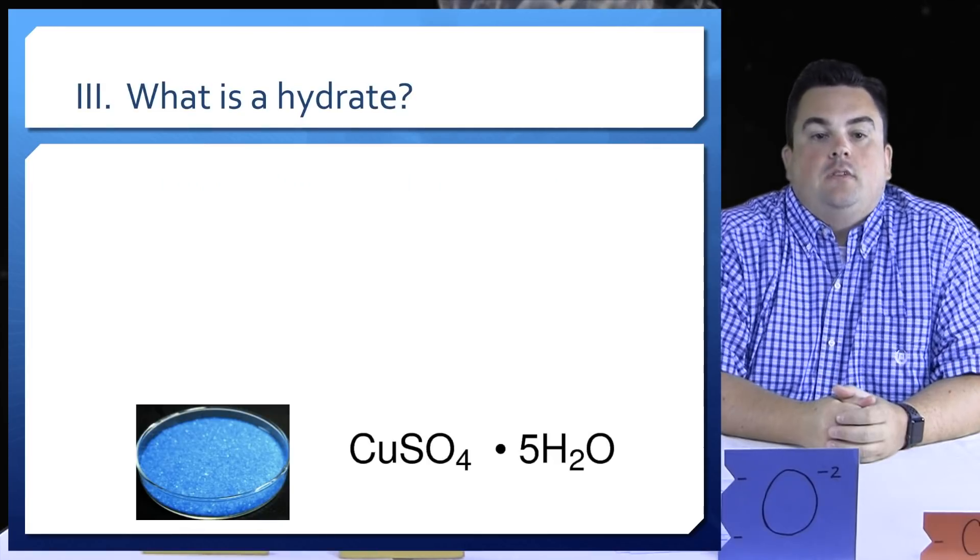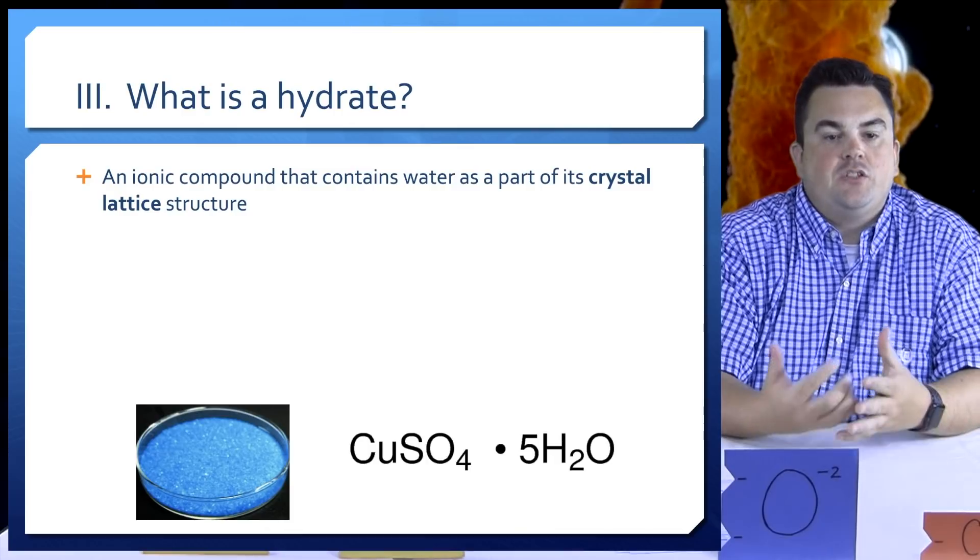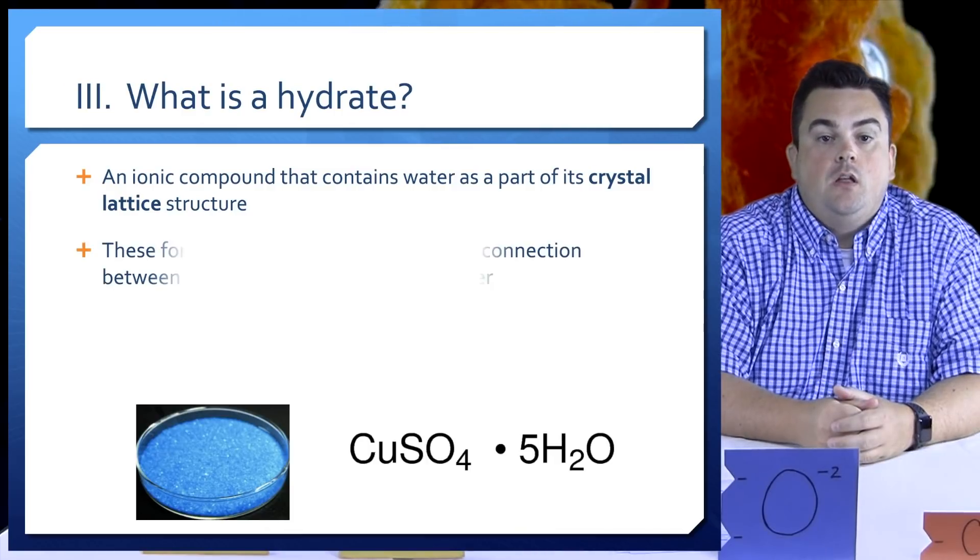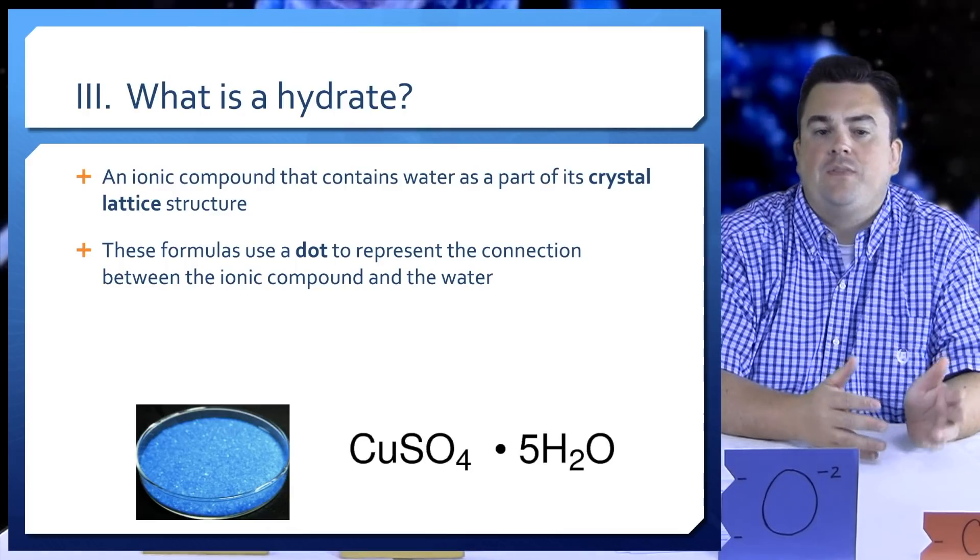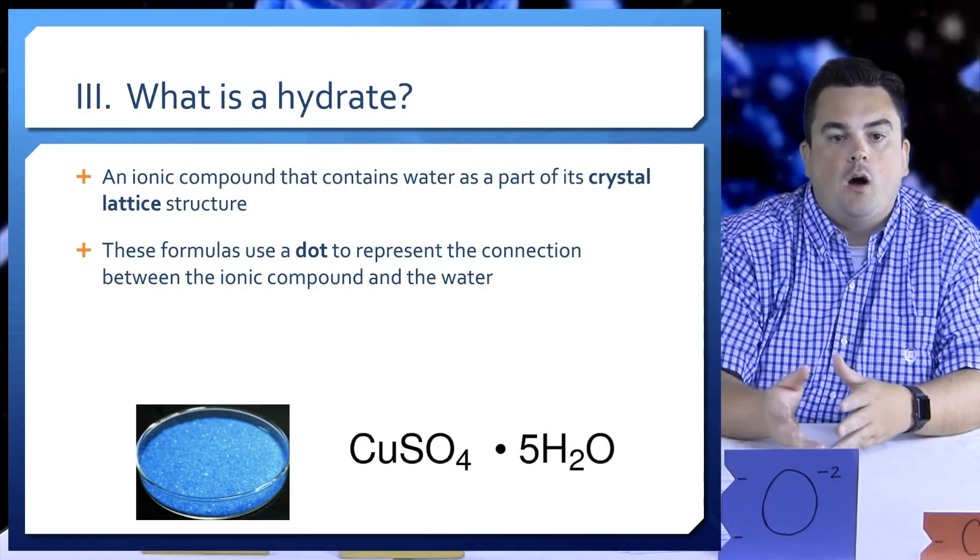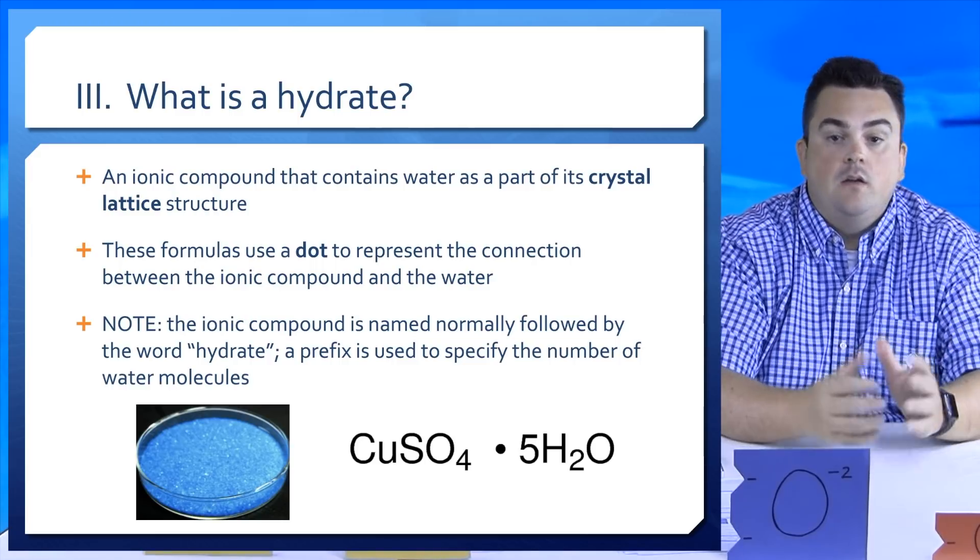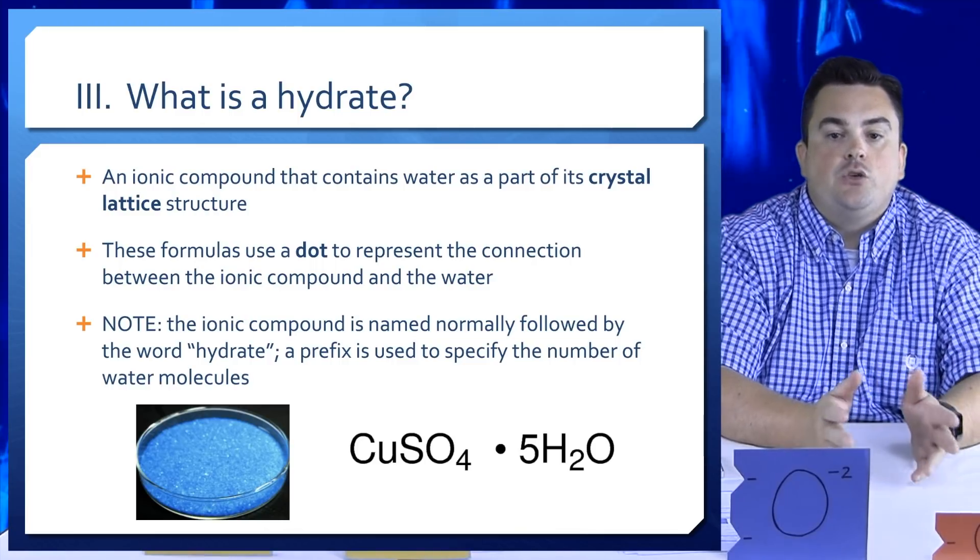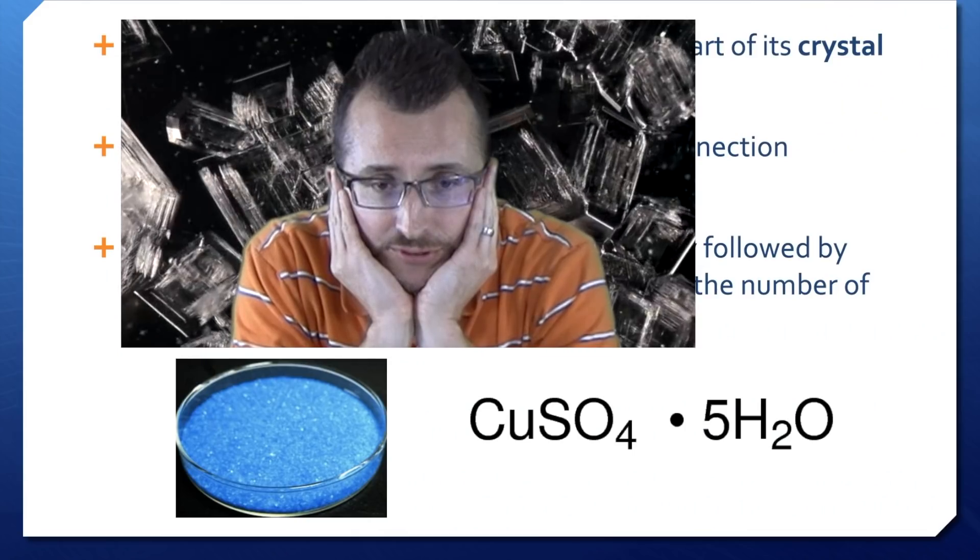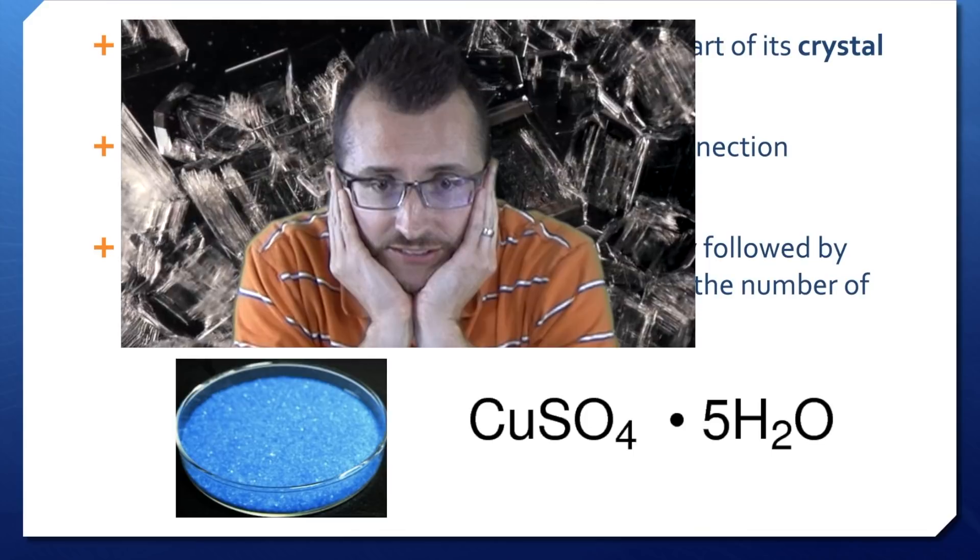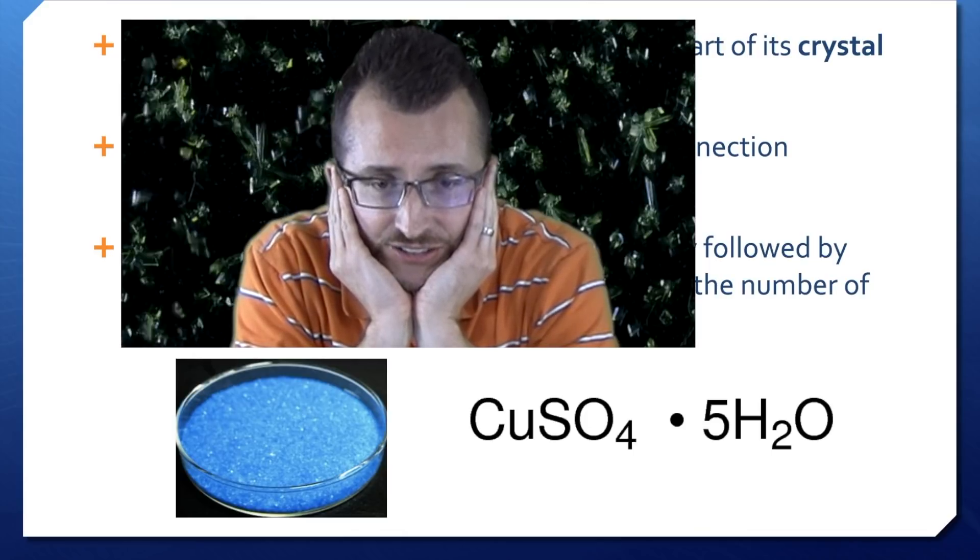What is a hydrate? It's an ionic compound that contains water as part of its crystal lattice structure. These formulas use a dot to represent the connection between the ionic compound and the water. Note the ionic compound is named normally followed by the word hydrate. A prefix is used to specify the number of water molecules. Pretty crystals. I just love CuSO4·5H2O.